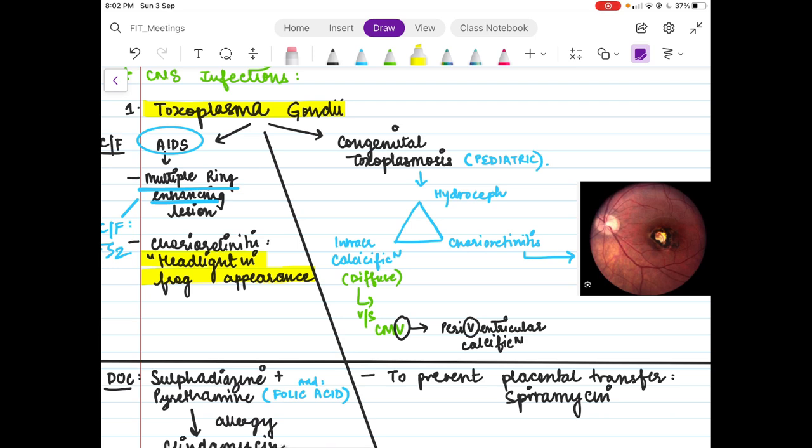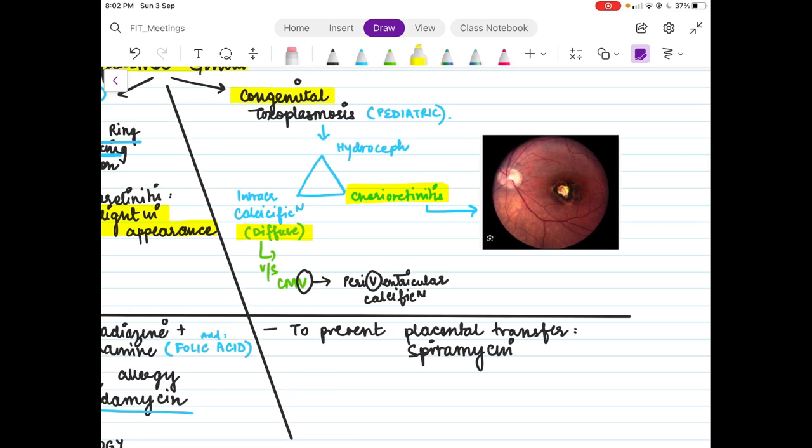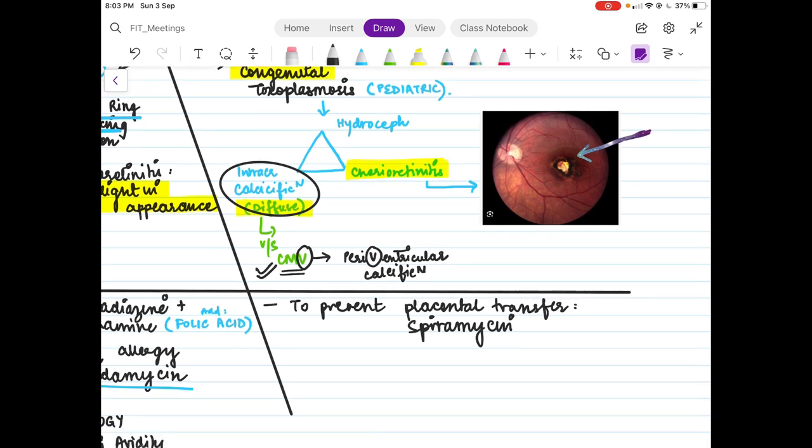Coming to the other clinical spectrum is congenital toxoplasmosis, which is a pediatrics frequently asked question. You will have a triad of hydrocephalus, intracranial calcification which will be diffused, along with chorioretinitis. When you see chorioretinitis here, when you do the fundoscopy of a patient of congenital toxoplasmosis, you will see a punched-out scar like this one. Very important to differentiate between the intracranial calcification in congenital infections. You will also get another question of CMV. The biggest clue in CMV is it causes periventricular calcification. You will have the two lateral ventricles and along that, if you see white calcification on a CT, then it will be a CMV infection and toxoplasmosis. Very important, this question is very frequently asked. CMV, V for ventricular, remember this. CMV is also the most common cause of SNHL in children.